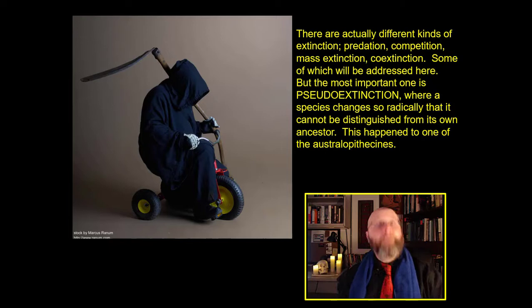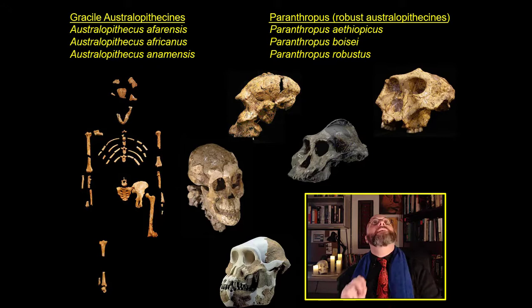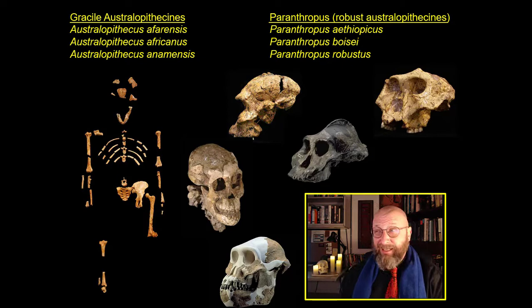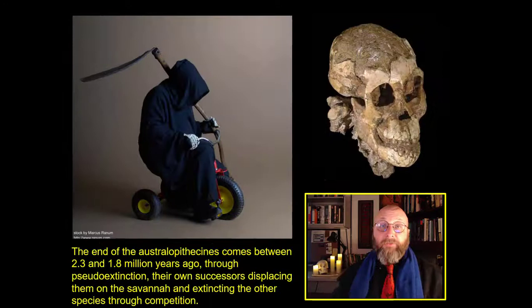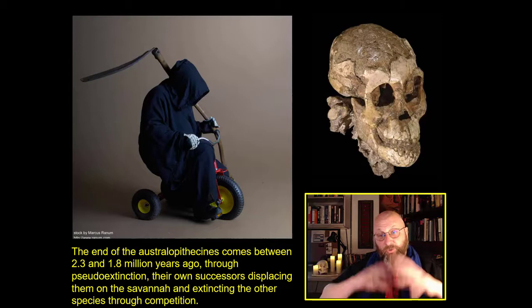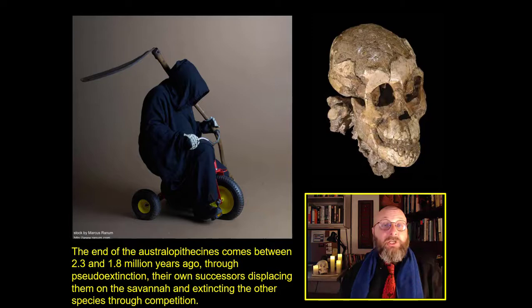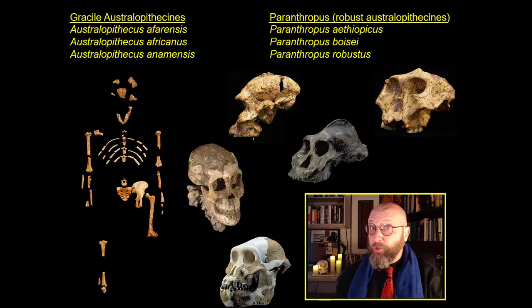This is what happens to one of these australopith species — one of them turns human, and then proceeds to out-compete all their own ground ape cousins. We don't know which australopith species goes human, nor actually do we know what kind of human they evolve into. The end of the australopithecines comes between 2.3 and 1.8 million years ago, through both pseudo-extinction and extinction through competition.